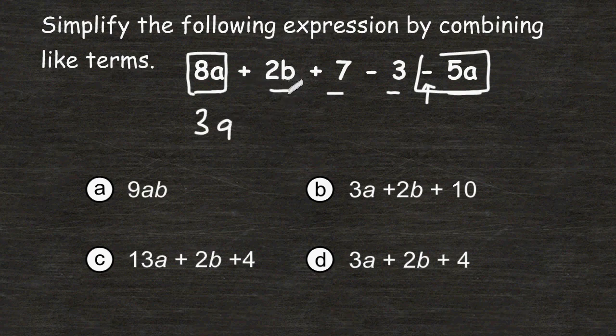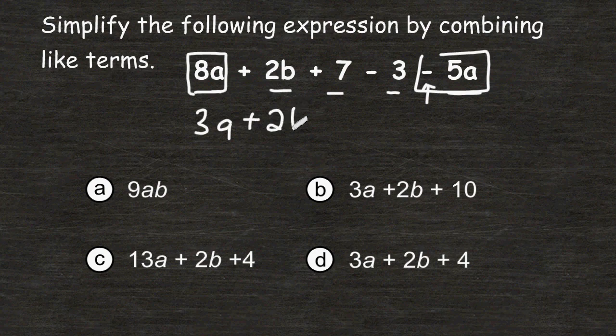The second term in the expression is 2b. There are no other terms with the variable b, so I cannot combine 2b with any other term, so I am going to simply bring that down in our expression.